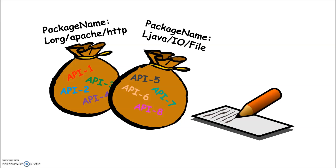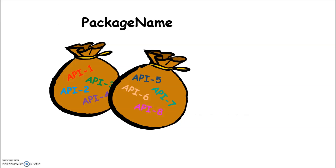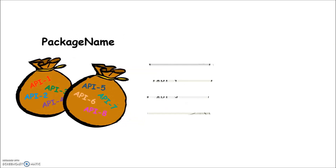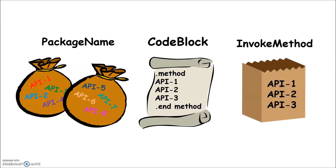In addition to coexistence in a package, we also analyze whether the extracted API calls belong to the same code block. A code block is defined as the code between the .method and the .end method in the decompiled Smali files. We also examine whether API calls use the same invoke method.